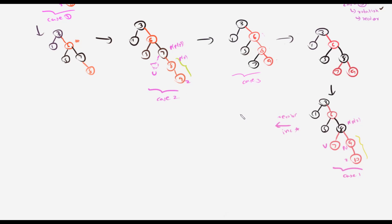After the Case 1 recolor: nodes 7 and 9 become black, node 8 becomes red, and the newly inserted node 10 remains red. We increment the pointer to the grandparent, which is node 6. Now there exists another violation — two consecutive red nodes — so we need to fix again.